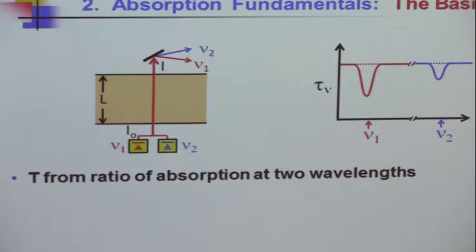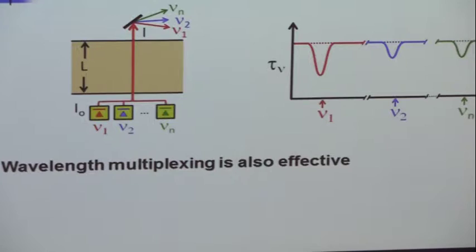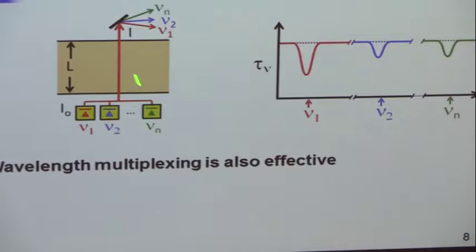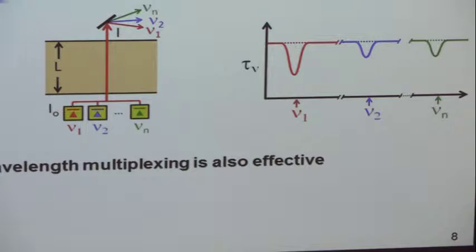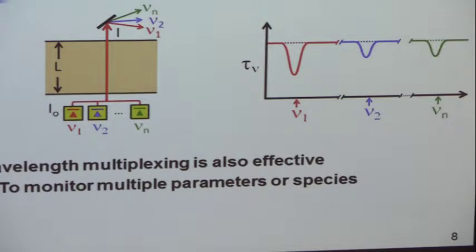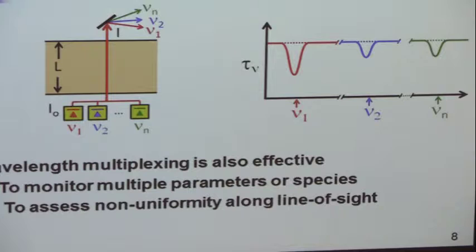As we learned how to measure more and more, it's more convenient to use multiple colors - wavelength multiplexing. We look at several colors at once, several lines, and we can use this information to monitor multiple species or multiple parameters. More information, more measurements leads to more information. We also can look at whether it's uniform along the line of sight. By combining enough different colors, each with a different dependence on temperature and mole fraction, you can analyze the non-uniformities along that line to some degree. Otherwise, you're getting a path average.